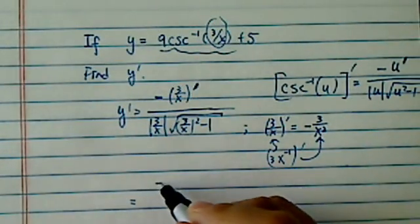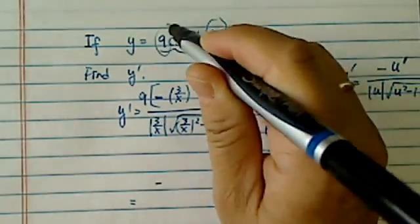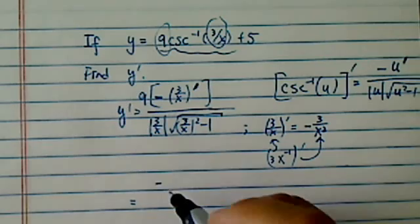Let's substitute it back in there. It's a little messy at the beginning. Oh, I forgot a 9 here. It's a constant here. So it's 9.